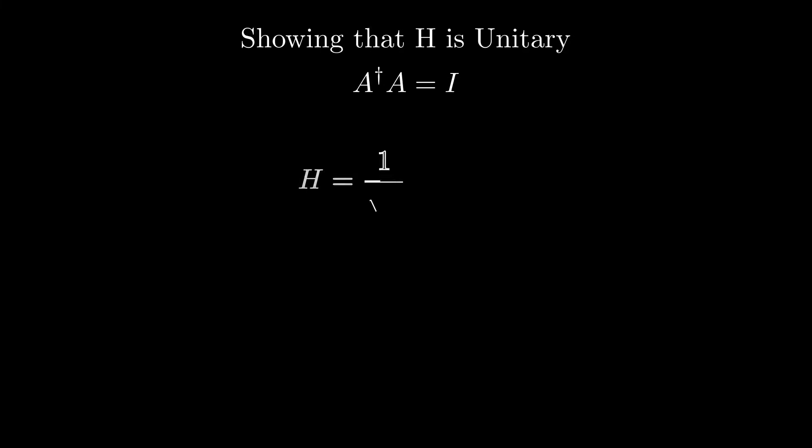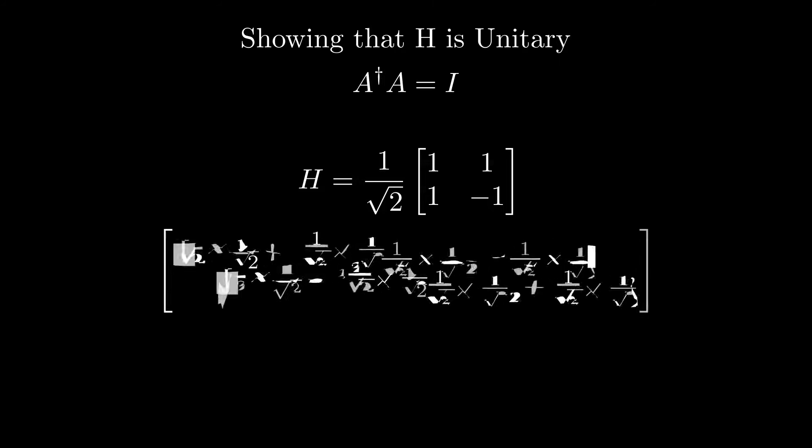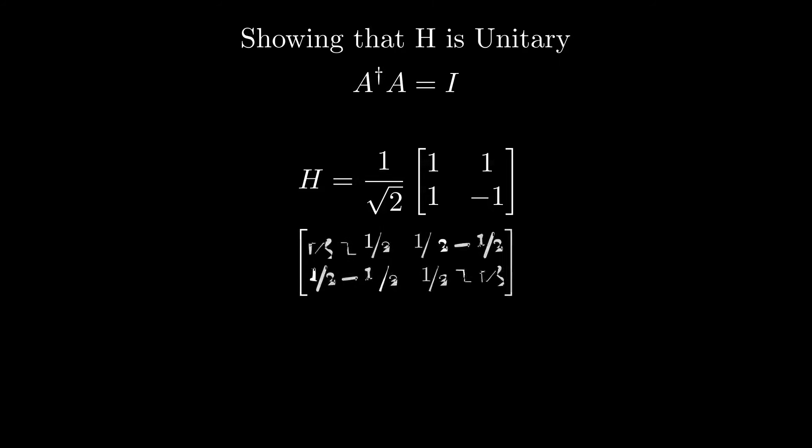So let's check if the Hadamard-Gates matrix is unitary. As expected, it is in fact unitary, since the left-hand side equals the identity matrix.